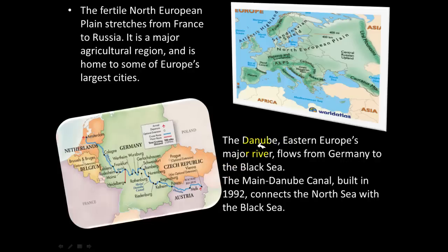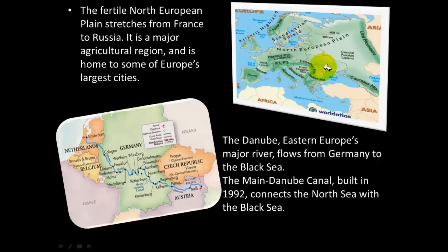Eastern Europe's major river is the Danube, which flows from Germany to the Black Sea. The Main-Danube Canal, built in 1992, connects the North Sea — located between Great Britain and Scandinavia — to the Black Sea, effectively cutting a navigable waterway through the entire continent of Europe.